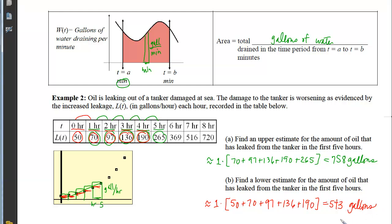So worst case scenario, you've lost 758 gallons. Best case scenario, you've lost 543 gallons.